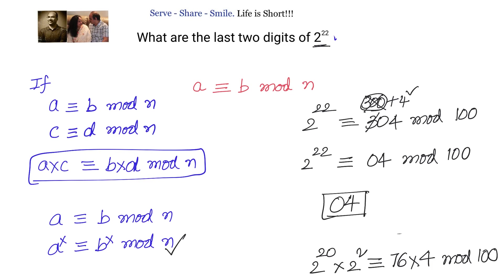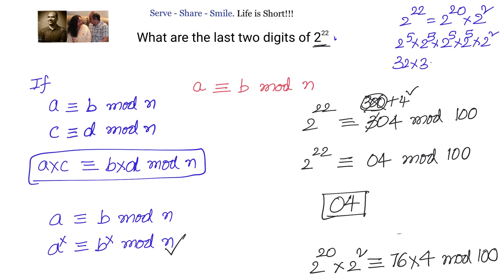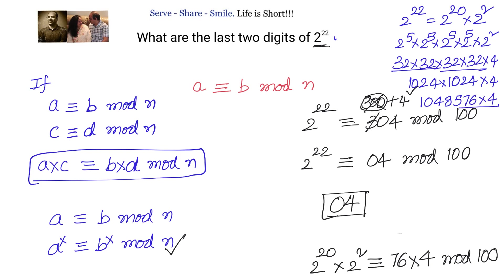Since the number is manageable, we can verify this directly. 2 power 22 equals 2 power 20 times 2 squared, which is 2 power 5 times 2 power 5 times 2 power 5 times 2 power 5 times 2 squared. That gives us 32 times 32 times 32 times 32 times 32 times 4. Now 32 times 32 is 1024, and 1024 times 1024 is 1,048,576. Multiplying with 4 gives a number whose last two digits are 0 and 4.